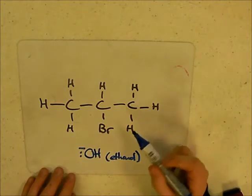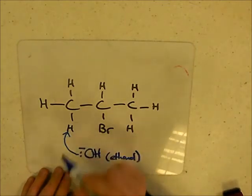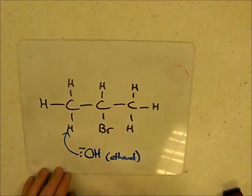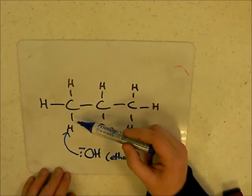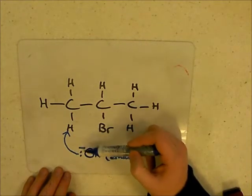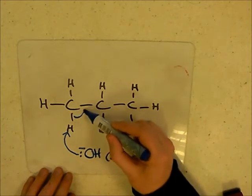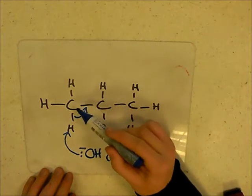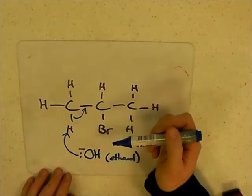So this lone pair forms a new bond with that hydrogen there. This hydrogen now doesn't need these two electrons in this bond here, because it's already got a bond between the oxygen and the hydrogen. So these two electrons drop down into the carbon and form a double bond between that carbon and this carbon, because there will now be four electrons in that bond.